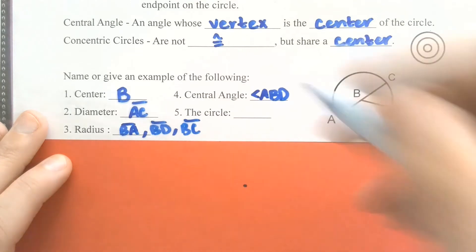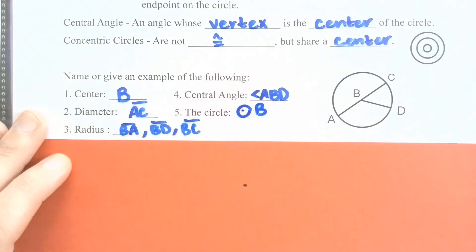And then the circle itself, since it has a center of B, we would call it Circle B.